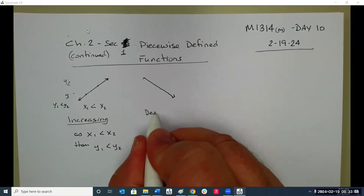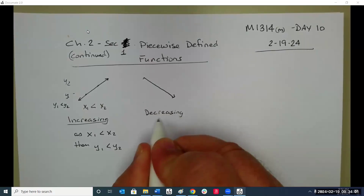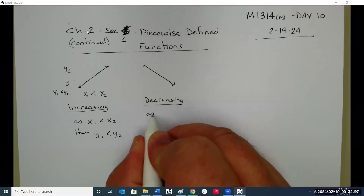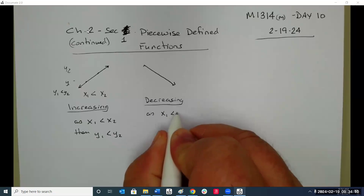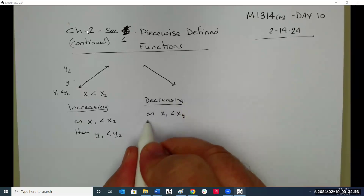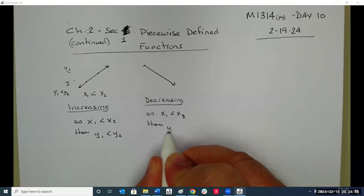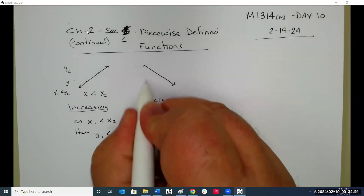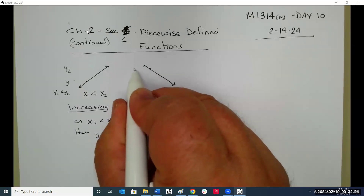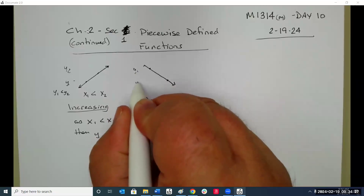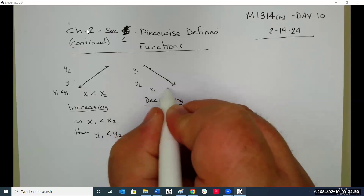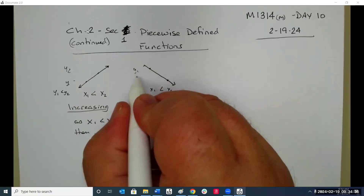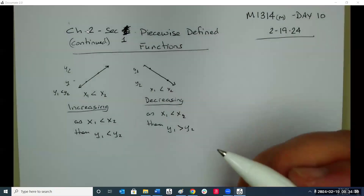A decreasing function is one where as x1 is less than x2, then y1 is greater than y2. So y1 is higher than y2 — that's decreasing.